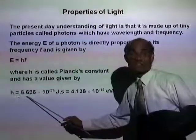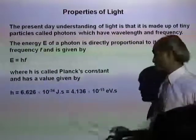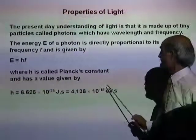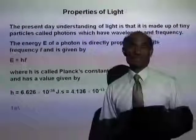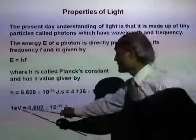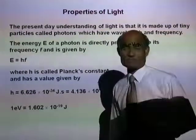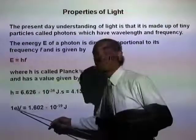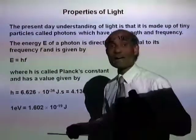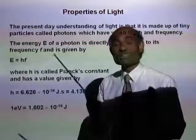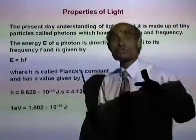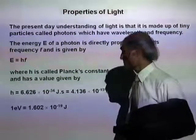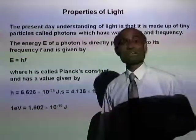Planck's constant has a value of 4.136 times 10 to the negative 5 electron volt second. One electron volt is the energy acquired by an electron when it is accelerated by a potential difference of 1 volt, and it is equivalent to 1.602 times 10 to the negative 19 joules.